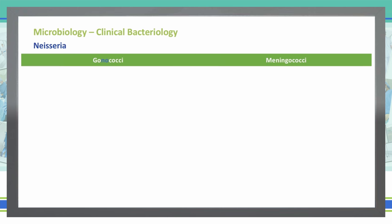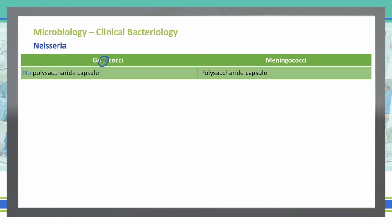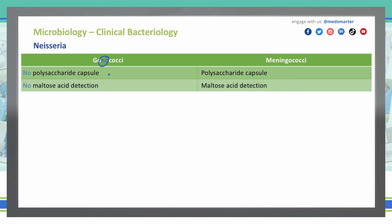Let's look at a compare and contrast between gonococcal and meningococcal. The gonococcal has NO highlighted, which is important in determining the presence or absence of certain features. The polysaccharide capsule is present in meningococcal, but there is NO polysaccharide capsule in gonococcal. As far as meningococcal goes, it has a maltose acid detection, but there is NO maltose acid detection in gonococcal.